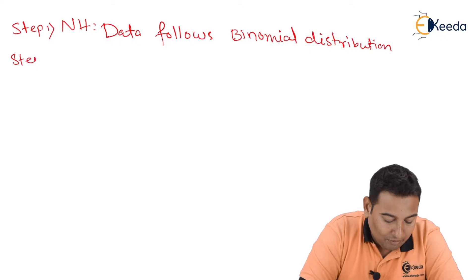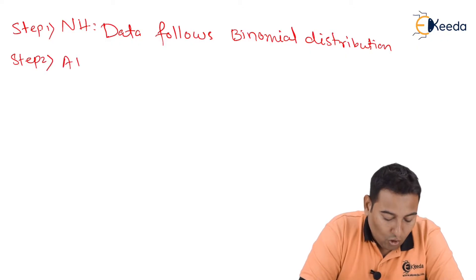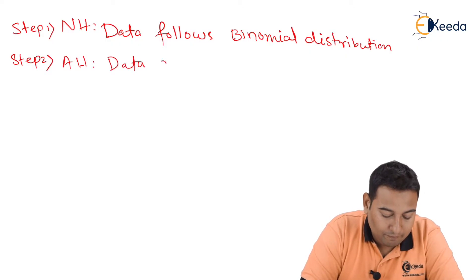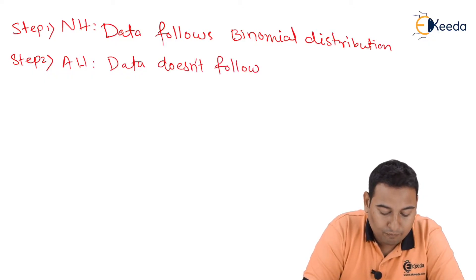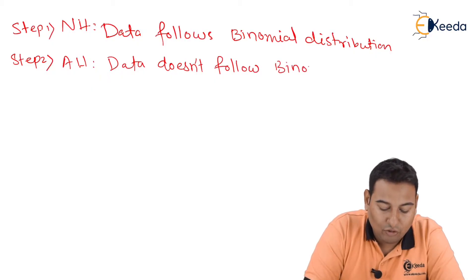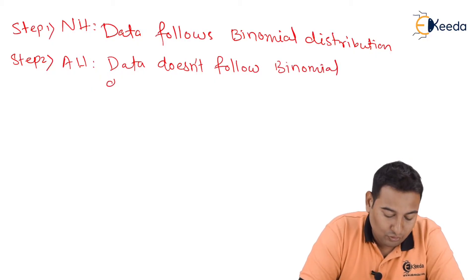Step number two — alternate hypothesis: data does not follow binomial distribution. So the first two steps are done.